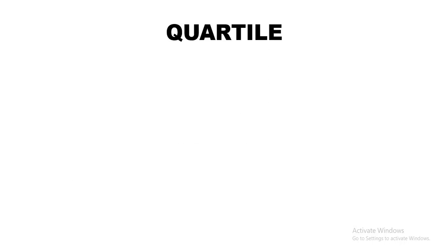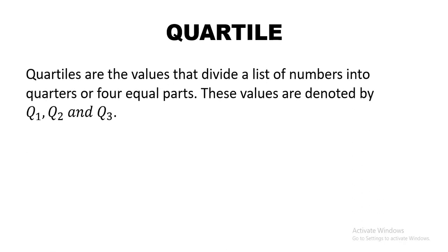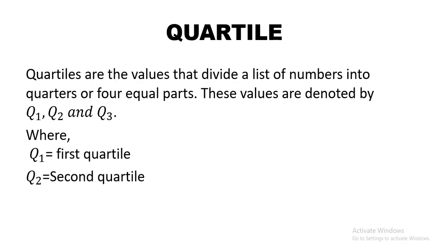First of all we will be learning about quartile — what exactly a quartile is. Quartiles are the values that divide an arranged data into quarters or four equal parts. These values are denoted by Q1, Q2 and Q3, where Q1 represents the first quartile, Q2 represents the second quartile and Q3 represents the third quartile.